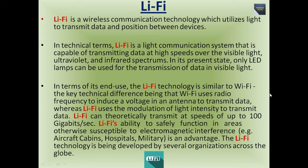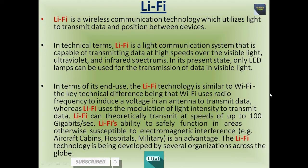In terms of its end use, the Li-Fi technology is similar to Wi-Fi. The key technical difference being that Wi-Fi uses radio frequency to induce a voltage in an antenna to transmit data, whereas Li-Fi uses the modulation of light intensity to transmit data. Li-Fi can theoretically transmit at speeds of up to 100 gigabits per second. Li-Fi's ability to safely function in areas susceptible to electromagnetic interference — for example, aircraft cabins, hospitals, military — is an advantage. The Li-Fi technology is being developed by several organizations across the globe.